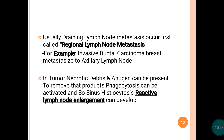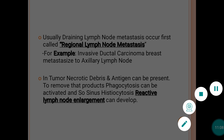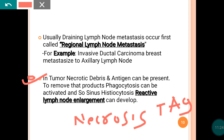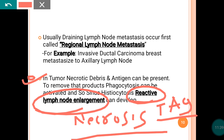The enlarged lymph node doesn't always indicate malignancy — it can be due to reactive enlargement. In malignancy there can be formation of necrotic debris, necrosis, and presence of tumor antigens. To remove these necrotic debris and antigens, phagocytes in the lymph node get activated and perform phagocytic function — that's why reactive lymph node enlargement can happen. So lymph node enlargement can be reactive regional lymph node enlargement.